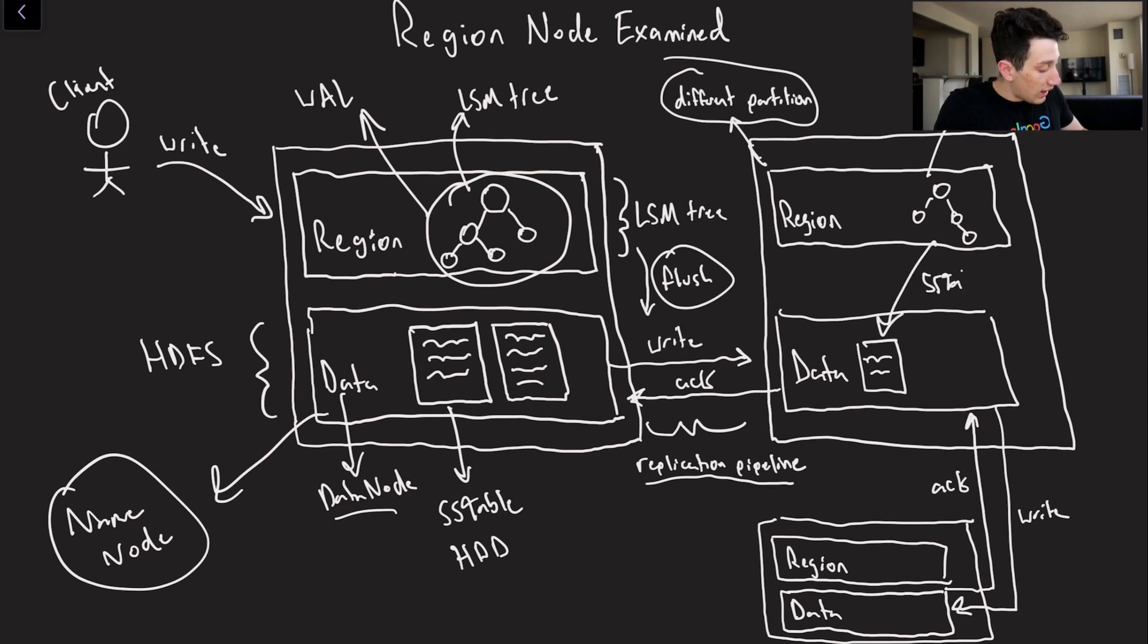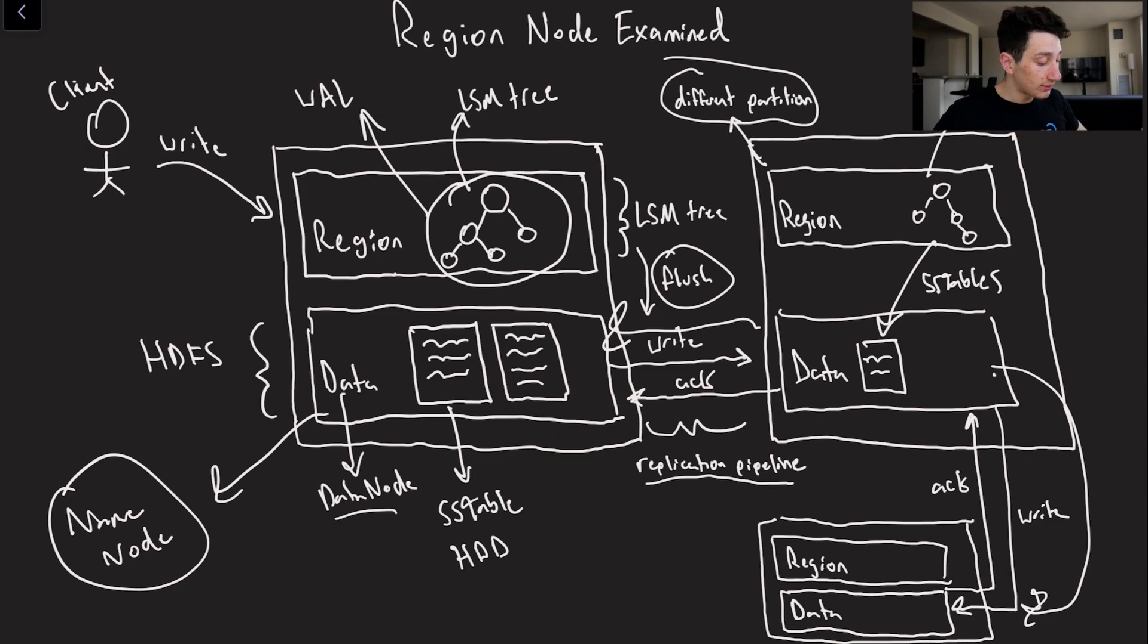And those can be replicated however Hadoop sees fit to either this node or to this node down here. The point is we can think of the replication part as a black box. Hadoop is taking care of that for us.